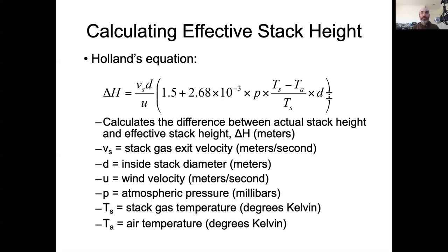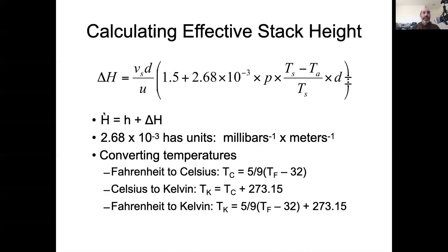We see the terms that affected and these other things, these constants in here are just empirical constants from this being calibrated. So to get to the overall stack height, we take this delta H and add it to the height of the actual emissions. It has units millibars per meter. And the temperatures here are in terms of Kelvin, which makes sense because we wouldn't want to divide by something that could be zero.